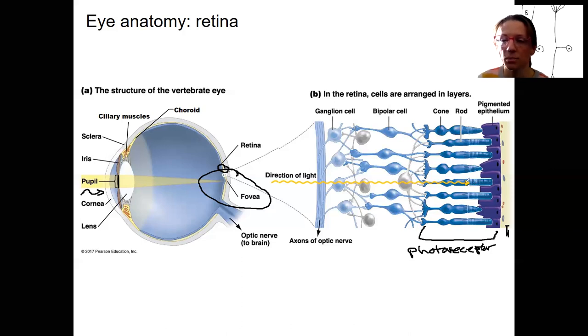So proteins are present within them that change shape when a photon of light binds, and they are able to transduce that light into a neural signal. So this is where visual information processing is initiated.